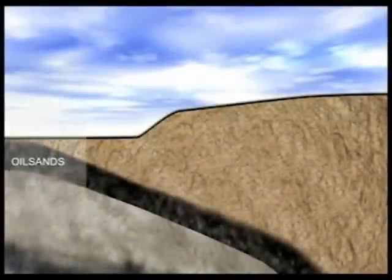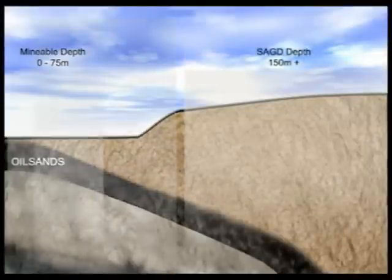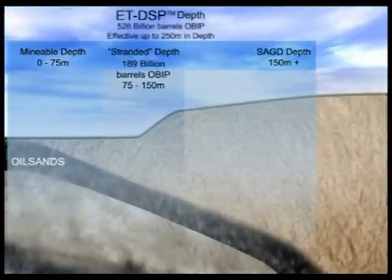ETDSP is not only an ideal replacement for mining and intermediate-depth SAGD, but can also produce reservoirs that are not currently considered economically or technically recoverable.